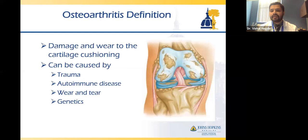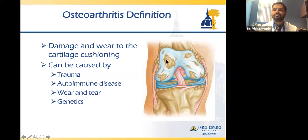So what is osteoarthritis of the knee? Basically, it is damage and wear to that articular cartilage cushioning. The articular cartilage starts to thin out, and you may even reach the point where it's completely lost and you have exposed bone — bone-on-bone arthritis. This can happen from normal wear and tear, kind of like how treads on a tire or the soles of a shoe wear out over time.